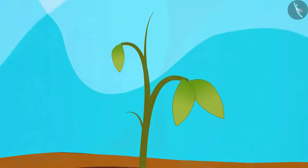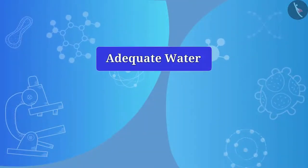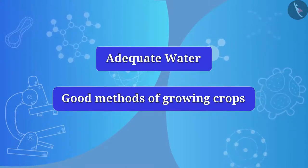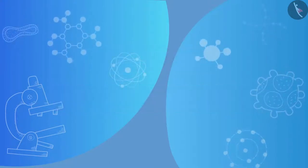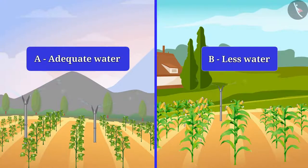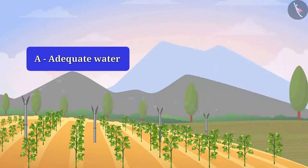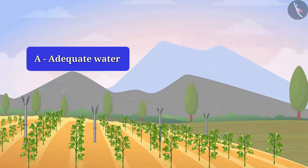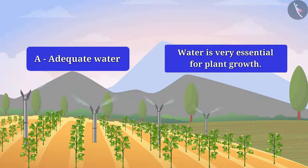Do you know what else plants need for their growth? Apart from nutrients, plants require adequate water and good methods of growing crops. There are two lands, A and B. Plants in land A are adequately watered, while in land B plants are not adequately watered. In which land do you think will plants grow properly? Land A, absolutely right.